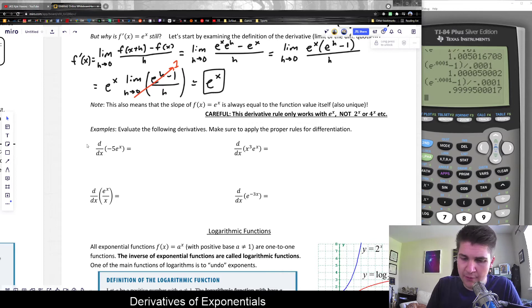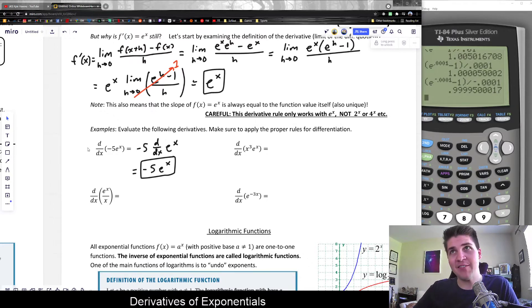So this would be equal to negative 5 d/dx of e to the x. And since we know the derivative of e to the x is just e to the x, nothing will change. And basically, this derivative is just exactly equal to itself, negative 5e to the x.